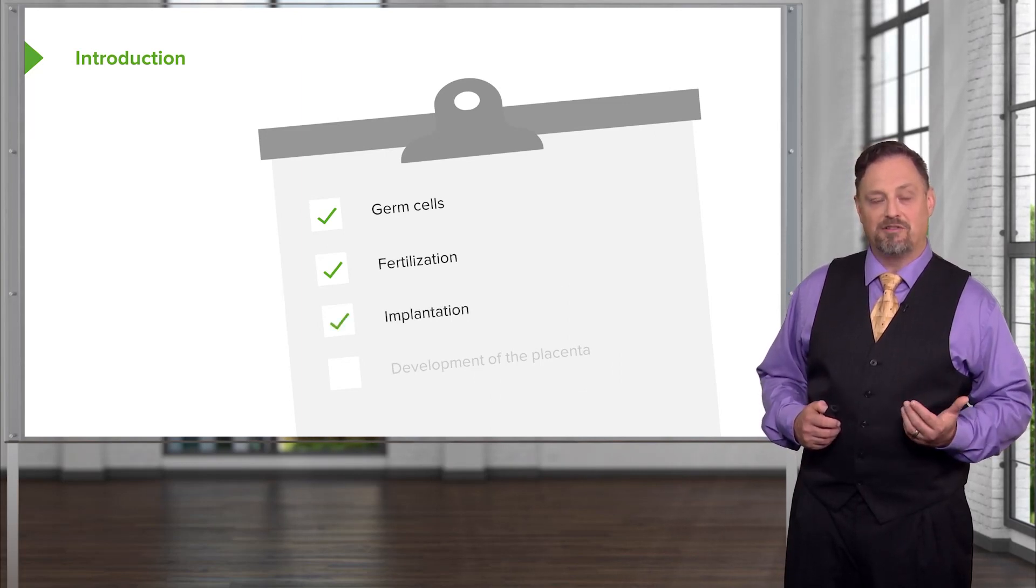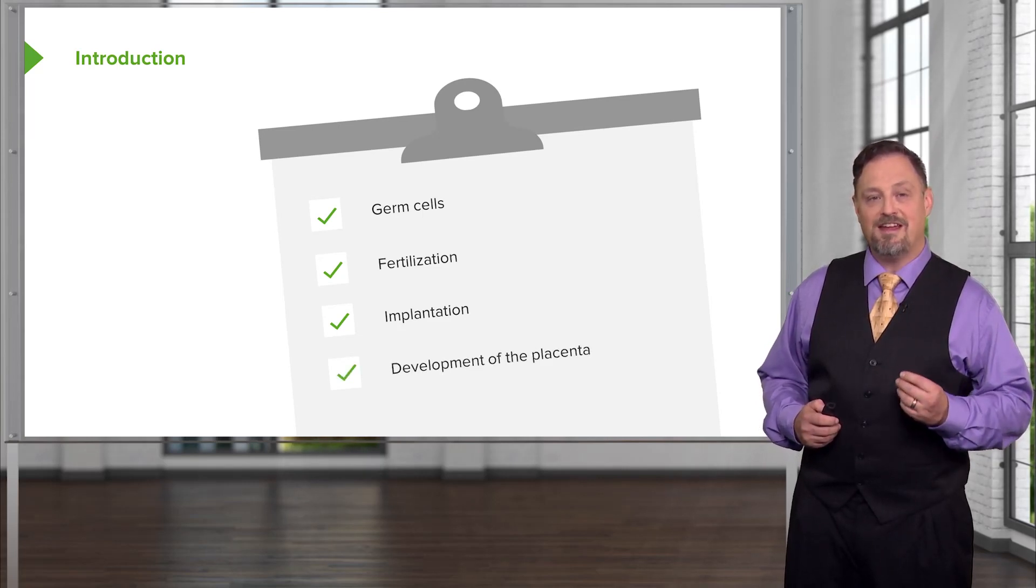Thereafter, we'll move to a microscopic investigation of the germ cells, the oocytes and spermatozoa, and how they form and are capable of fertilizing one another to produce a new and growing embryo. We'll then follow that growing embryo to the point of implantation into the uterus and how its growth is sustained by the placenta and umbilical cord.